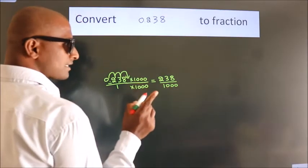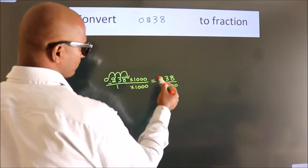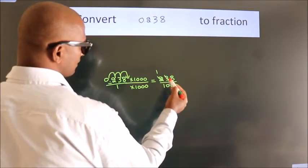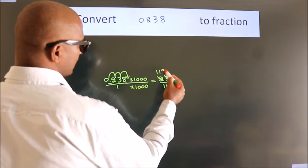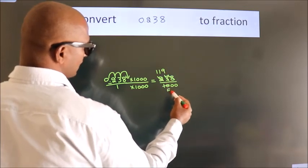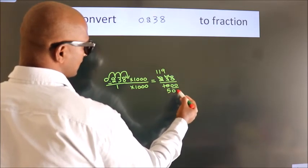Now I cancel with 2. 2 1s, 2 1s, 2 9s, 2 5s, these zeros as it is down.